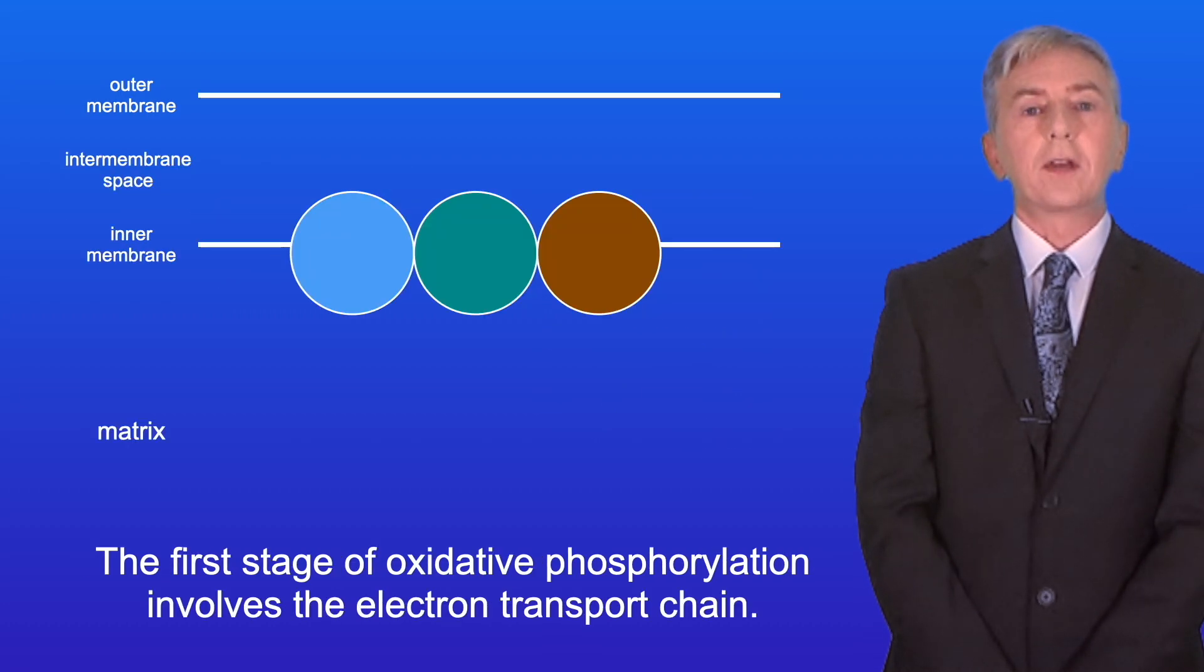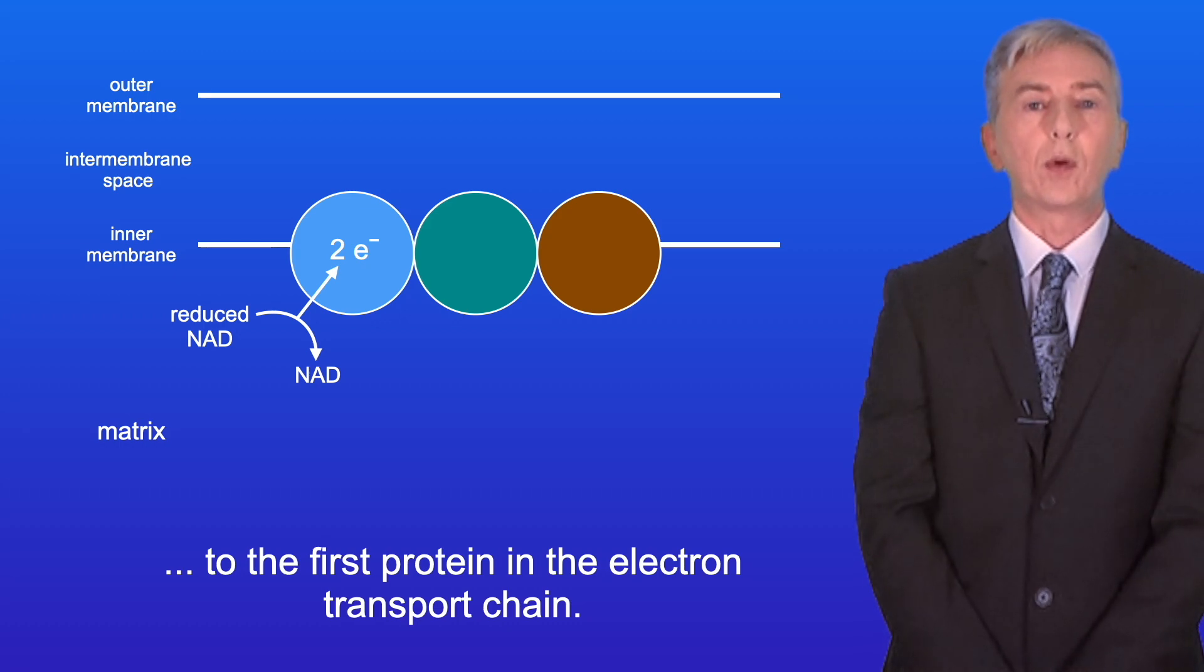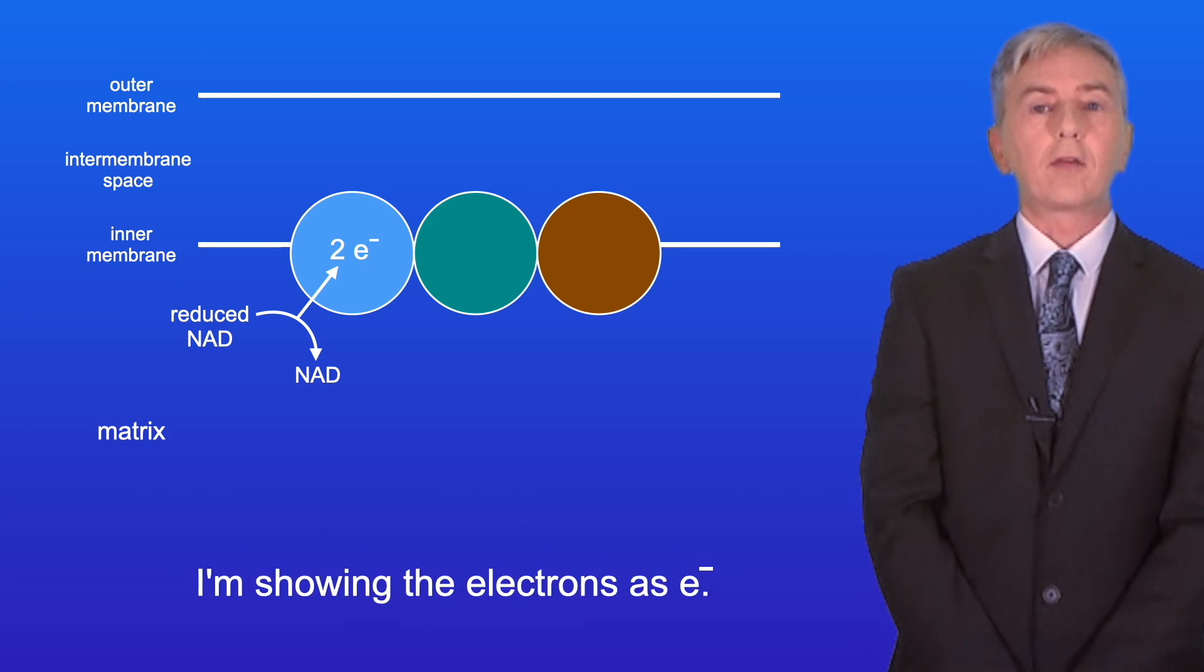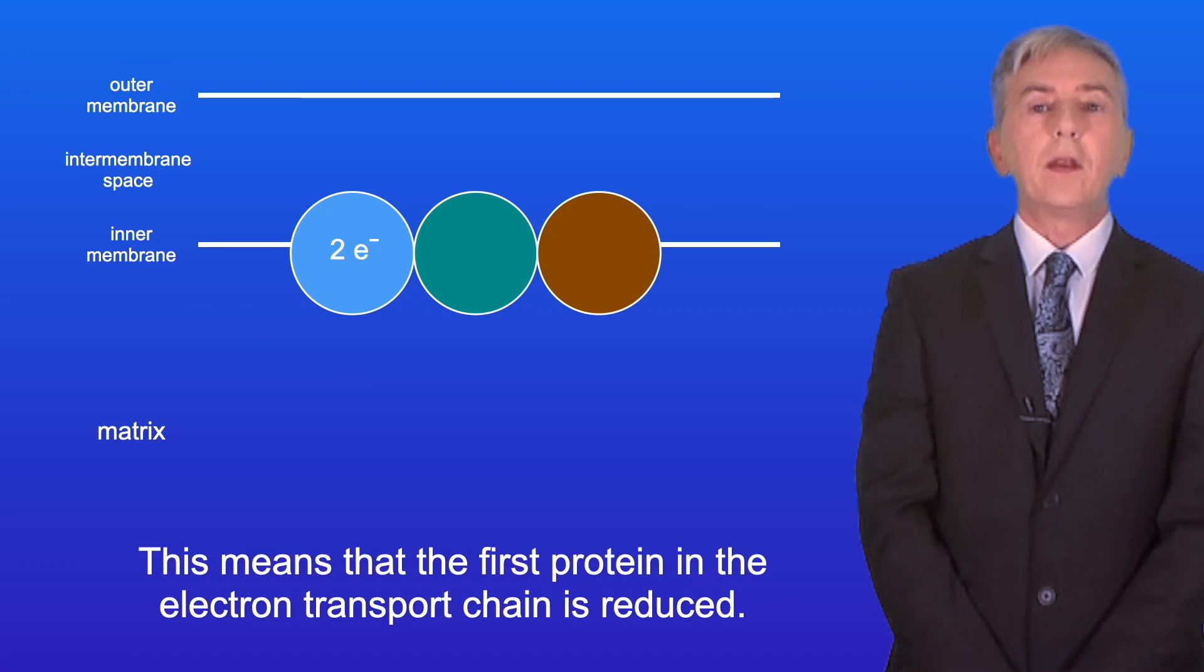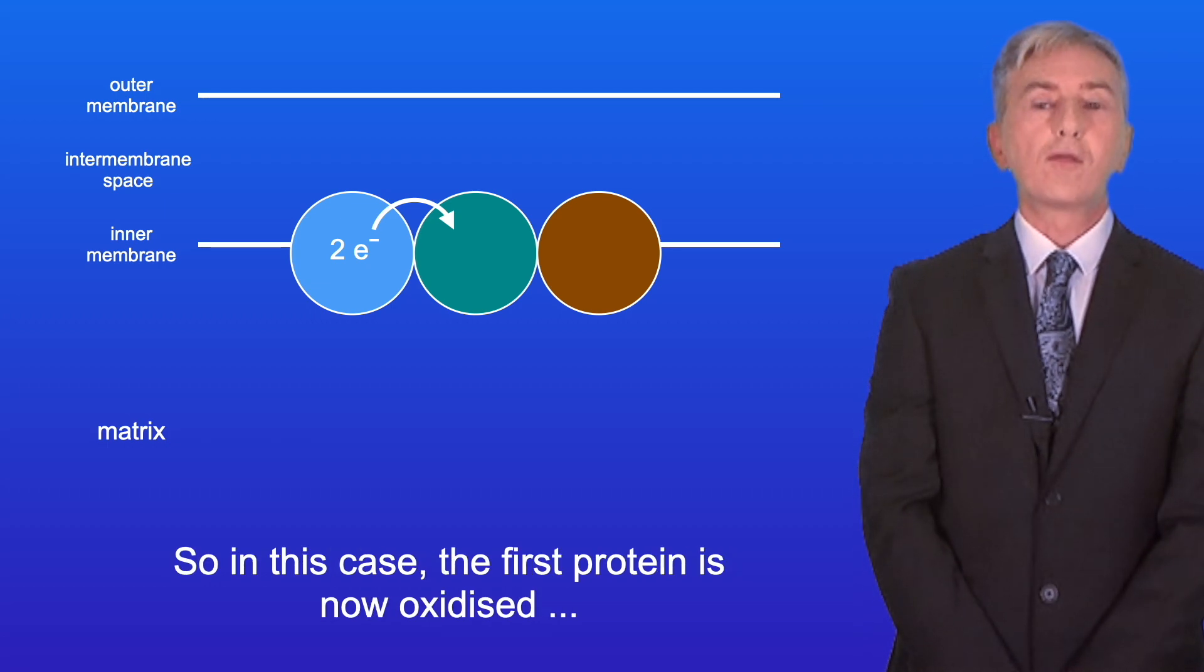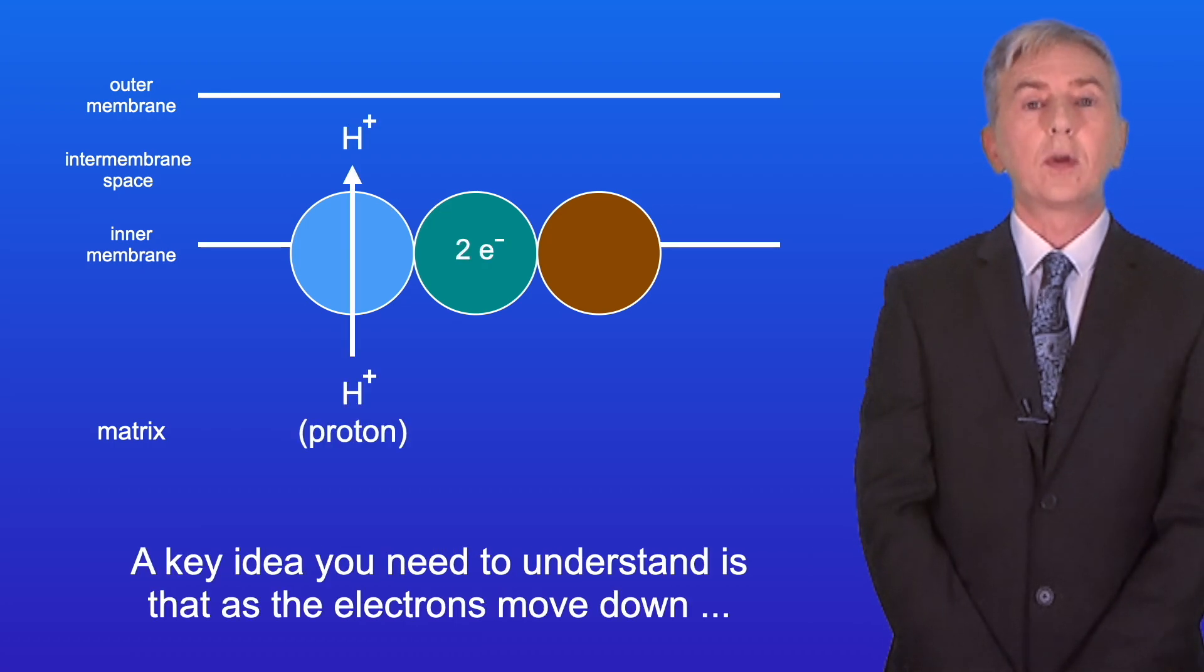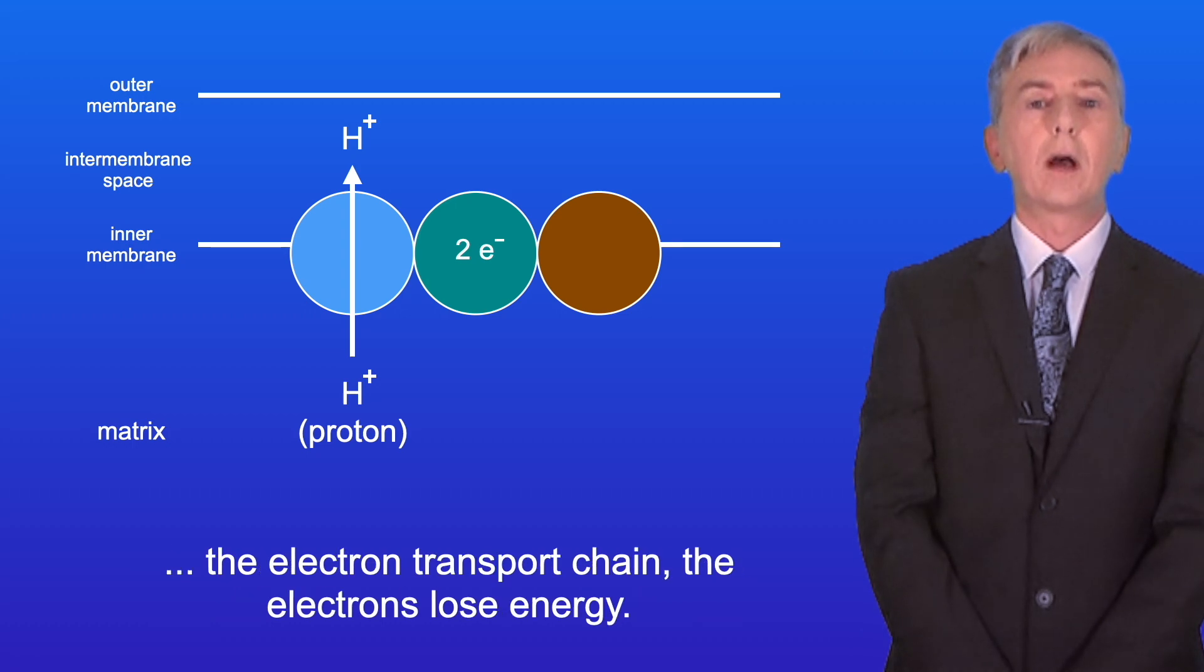The first stage of oxidative phosphorylation involves the electron transport chain. Reduced NAD transfers its two high-energy electrons to the first protein in the electron transport chain, and I'm showing the electrons as e-. This means that the first protein in the electron transport chain is reduced. The two electrons now pass to the second protein. So in this case, the first protein is now oxidized and the second protein is reduced. Now a key idea you need to understand is that as the electrons move down the electron transport chain, the electrons lose energy.